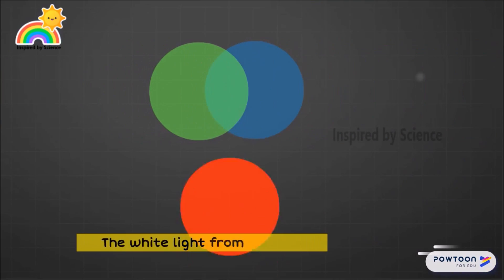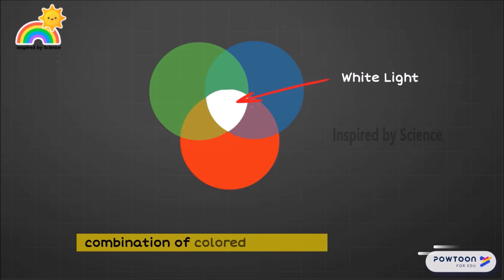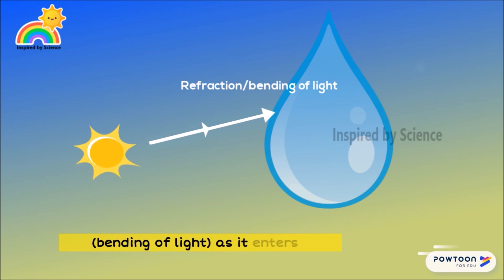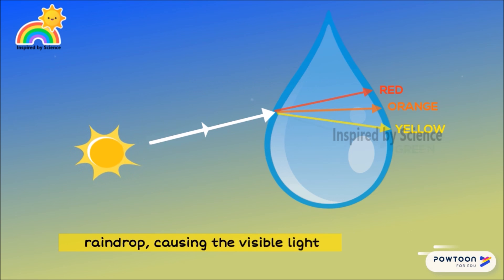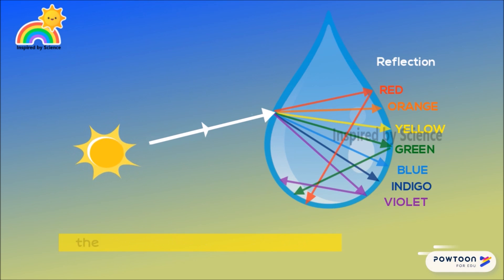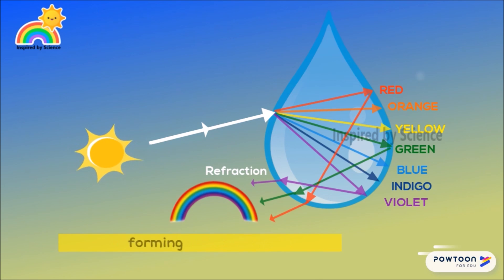The white light from the sun is a combination of the number of colored light rays. This white light is refracted as it enters a rain drop causing the visible light to separate into a spectrum of colors. The spectrum is reflected off the back of the drop and refracted again as it exits the drop forming a rainbow.